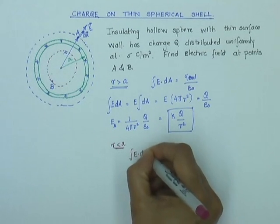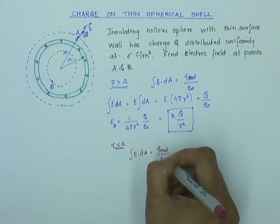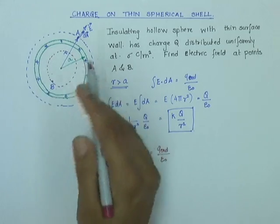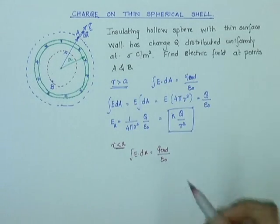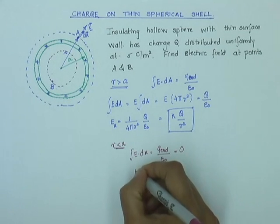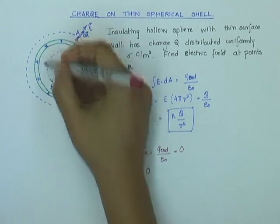Integral E dot dA equals Q enclosed over epsilon zero. But what is Q enclosed? Since this is a hollow sphere, there is no charge inside my Gaussian sphere. So my Q enclosed is zero, and that implies that electric field at every point inside my hollow sphere is zero.